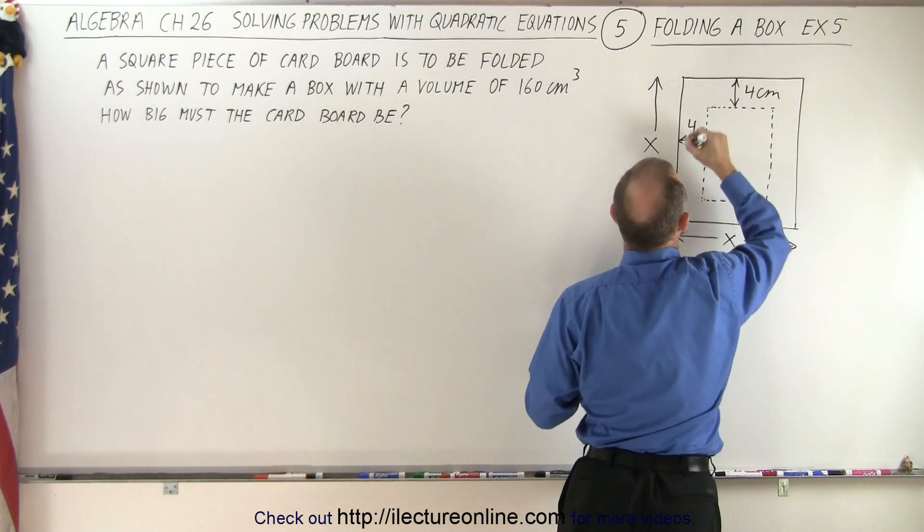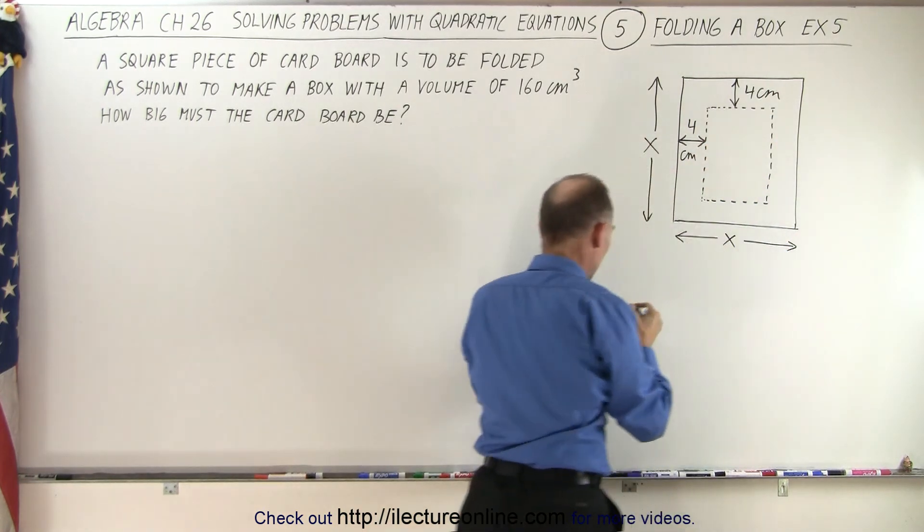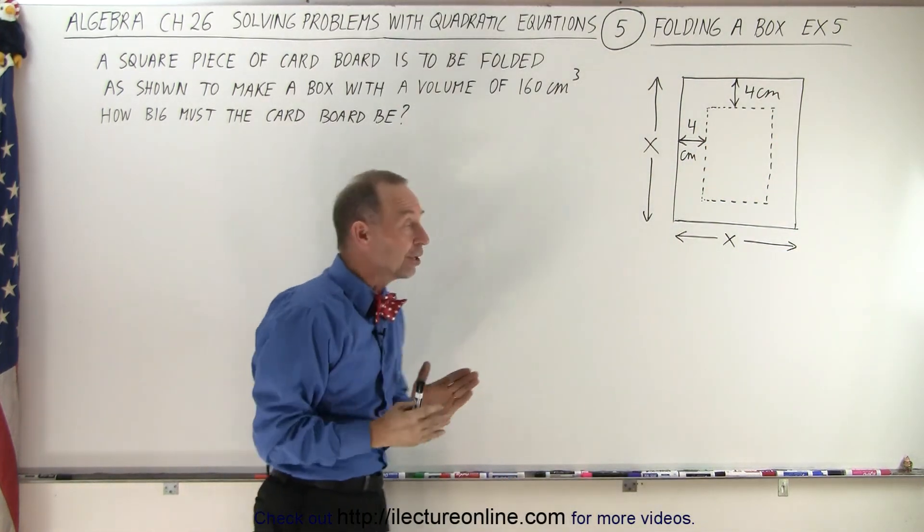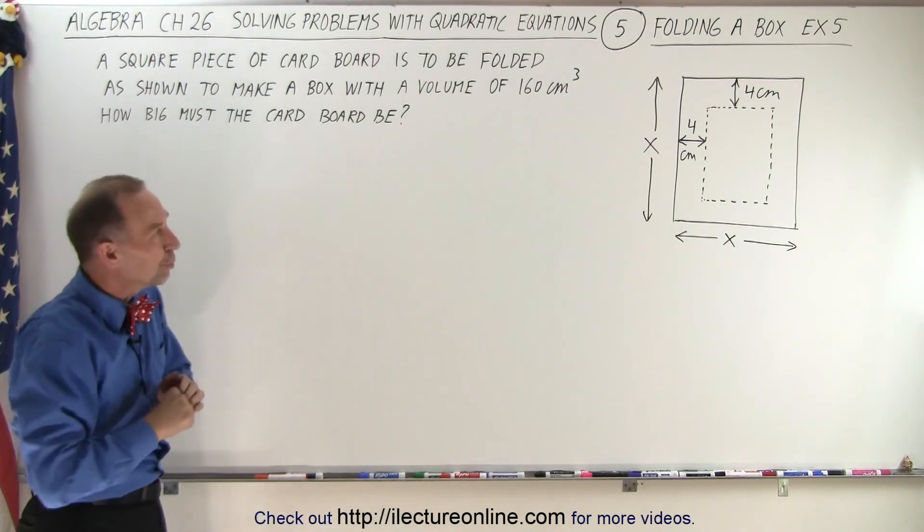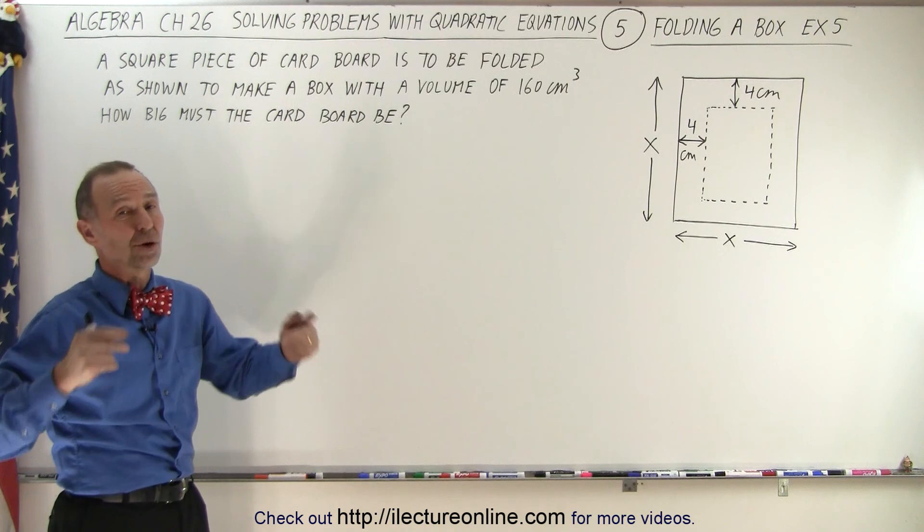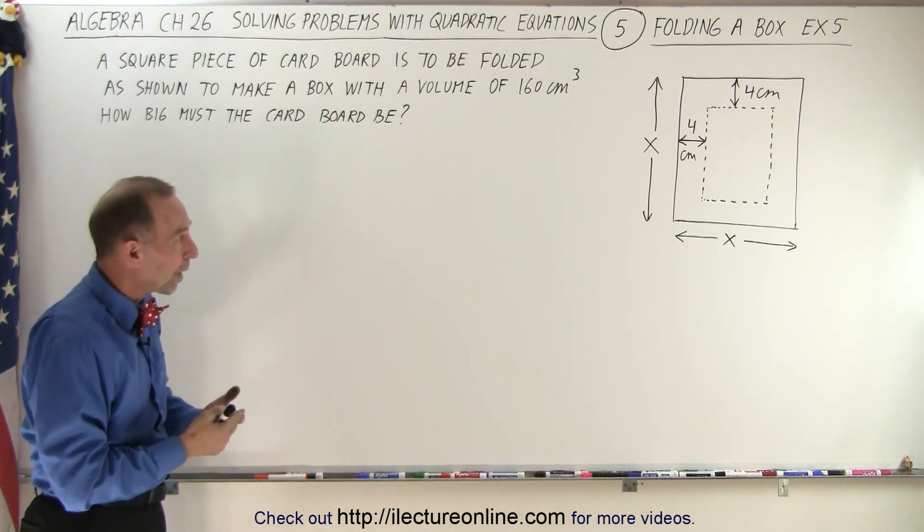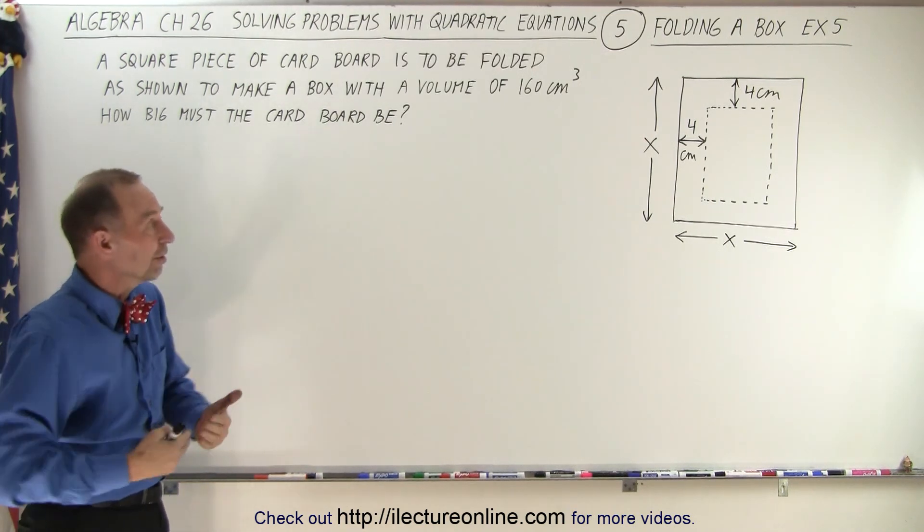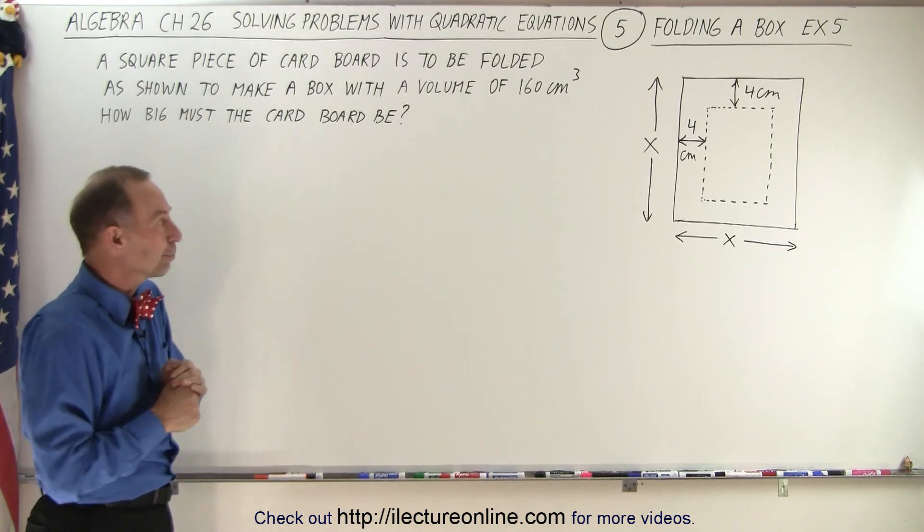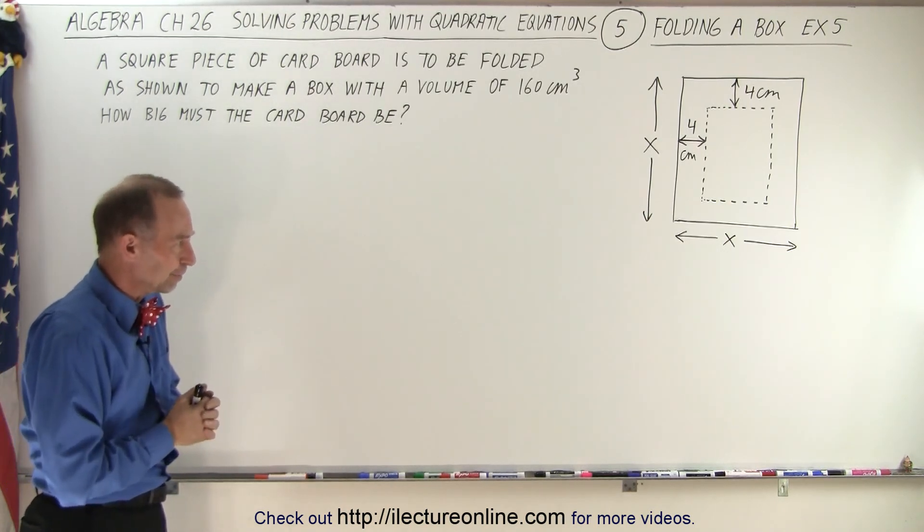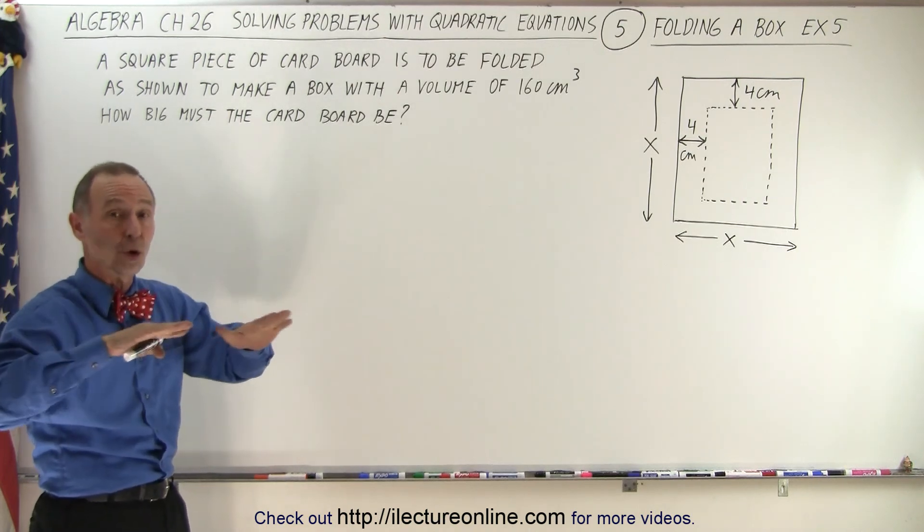These are indeed centimeters, four centimeters, and we want a box once we fold it up in such a way that the volume is 160 cubic centimeters. So we need to know how big a piece of square cardboard sheet that we should start with in order to have the end product being a box with that volume. Of course it's an open box with no lid.